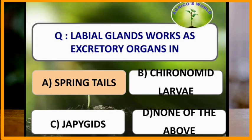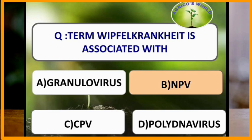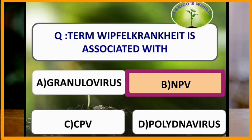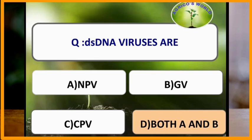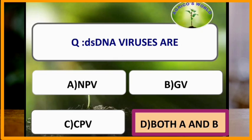The term 'viral crankite' is associated with nuclear polyhedrosis virus. Double-stranded DNA viruses are NPV and granulosis virus — both have double-stranded DNA.